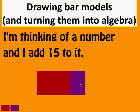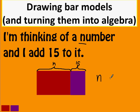Bring that together and then the last thing I need to do is annotate it. So I know that this bit is 15 — that's what I've added on to the number I'm thinking of. I should label this because otherwise people are going to want to know if we know what it is. We don't, so I'll give it a letter or variable — the most sensible would be n for number. So here we have the bar model: it represents n with 15 adding on to it. If I write that as an algebraic expression it would be n + 15.